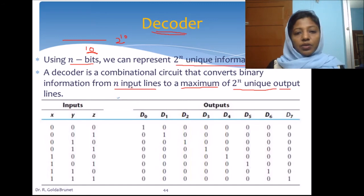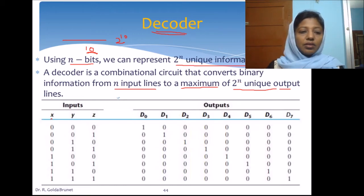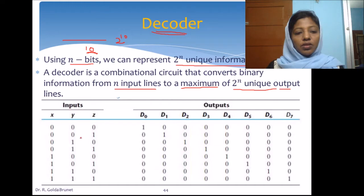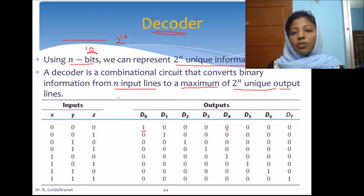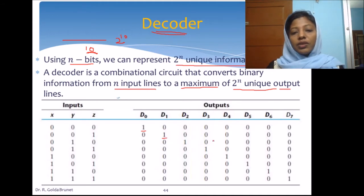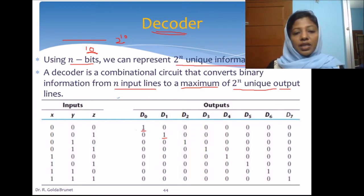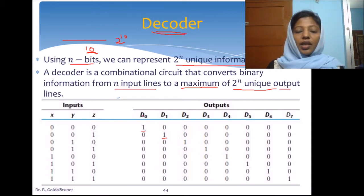We have n inputs and a maximum of 2 power n outputs. For example, consider a 3-to-8 decoder. We have 3 inputs: 0,0,0 through 1,1,1. The output when input is 0,0,0 is d0 equal to 1, rest are all zeros. When input is 0,0,1, d1 will be 1, rest are all zeros. So this binary input represents memory location 0 as d0, and memory location 1 as d1, and so on.